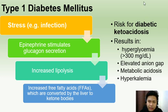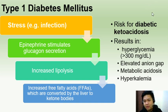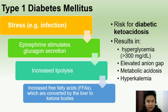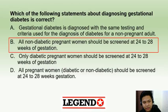Diabetic ketoacidosis usually manifests with hyperglycemia, elevated anion gap due to the presence of ketone bodies, metabolic acidosis, and hyperkalemia.